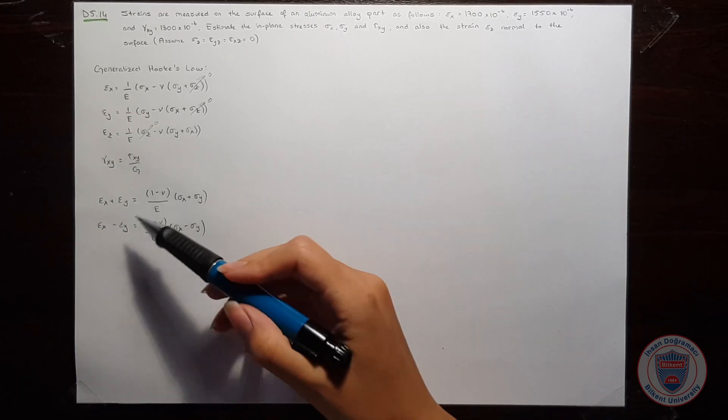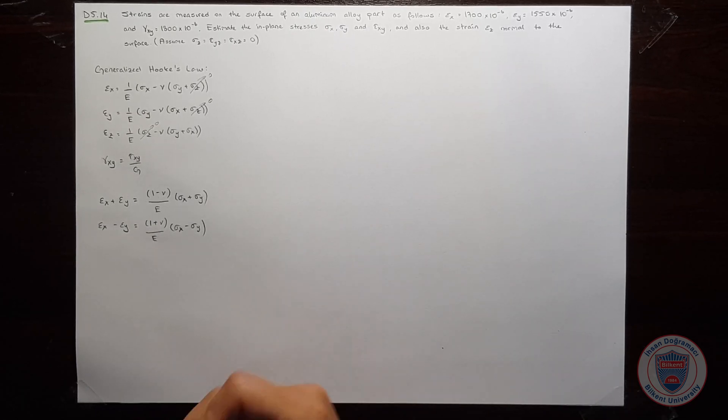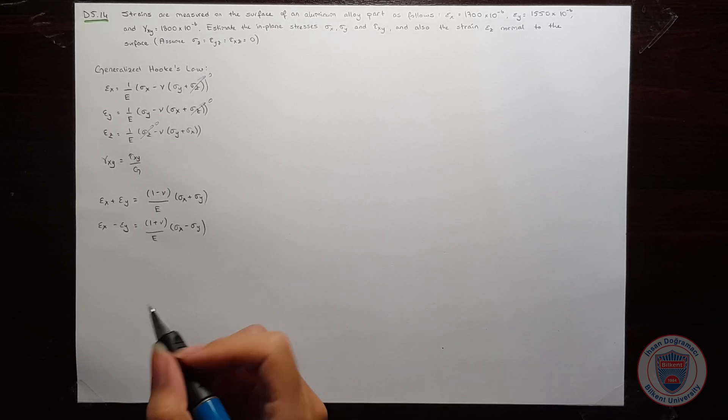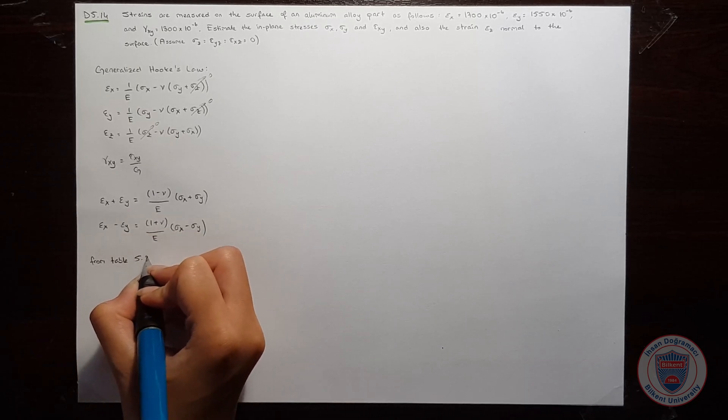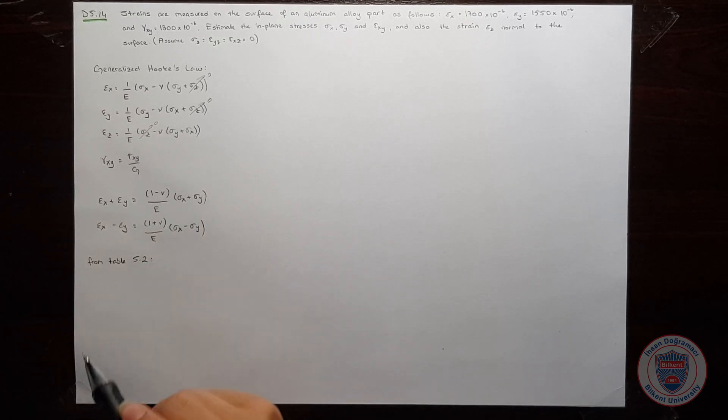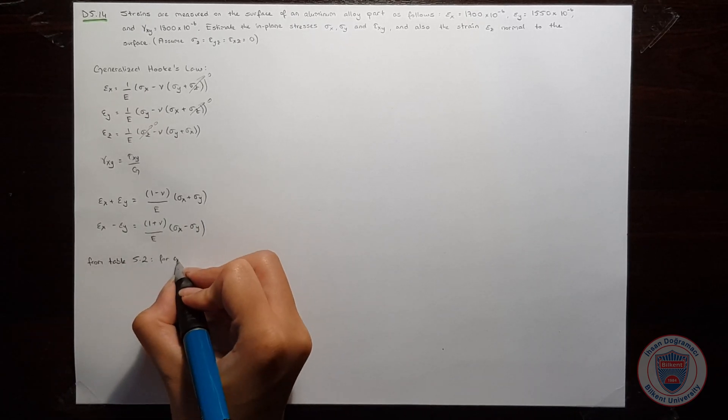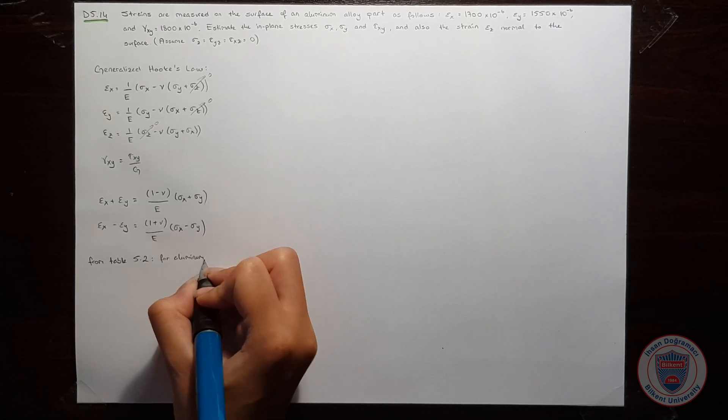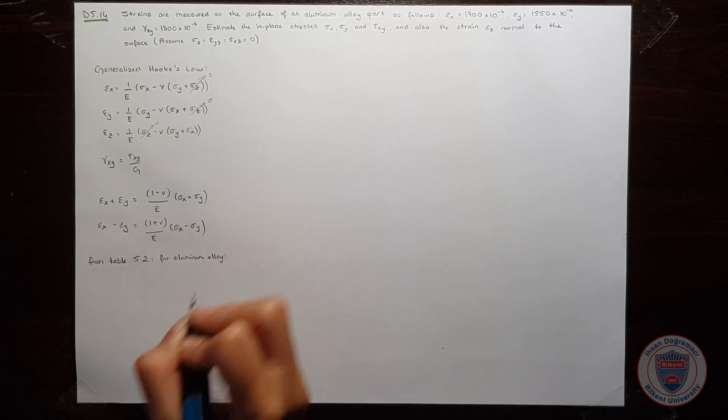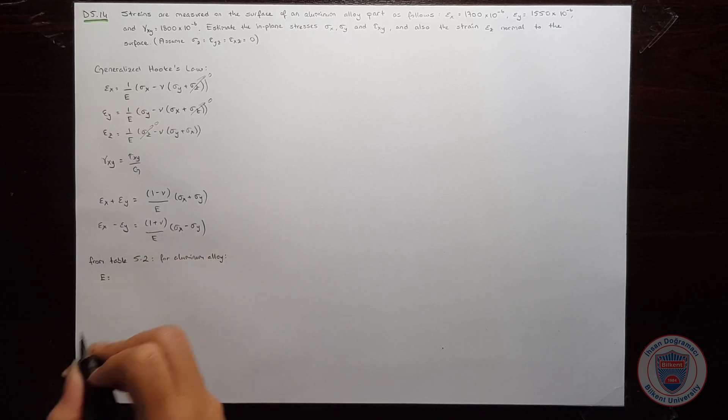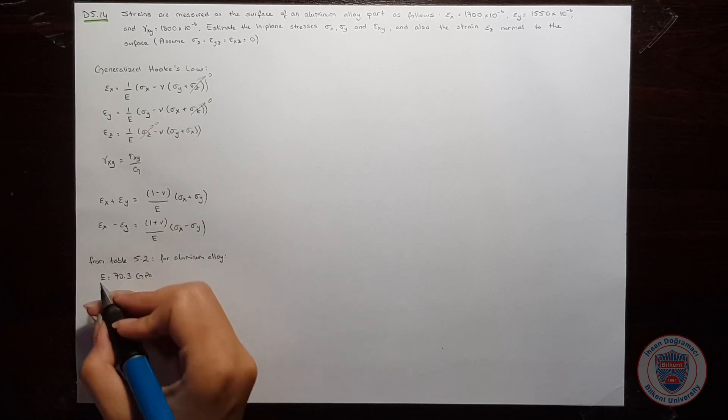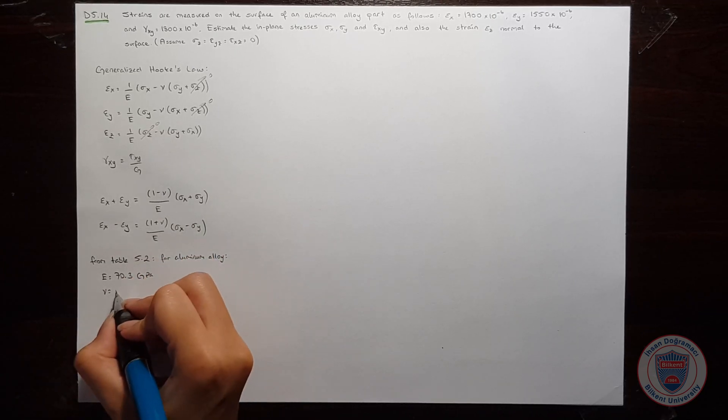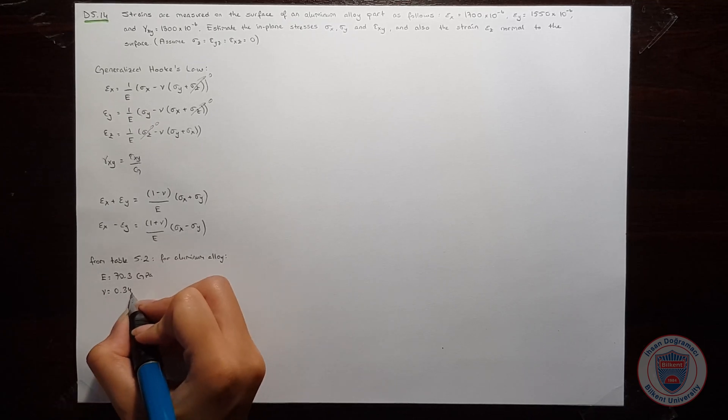We know the values for epsilon x and epsilon y, and we can find the values for Young's modulus and Poisson's ratio from the book. From table 5.2 for aluminum alloy, we have Young's modulus as 70.3 GPa and Poisson's ratio as 0.345.